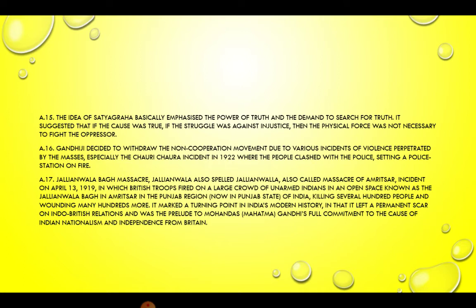Answer 17. Jallianwala Bagh Massacre. The Jallianwala Bagh massacre of Amritsar occurred on 13 April 1919, in which British troops fired on a large crowd of unarmed Indians in an open space known as the Jallianwala Bagh in Amritsar in the Punjab region, killing several hundred people and wounding many hundred more. It marked a turning point in India's modern history, leaving a permanent scar on Indo-British relations and was the catalyst to Mahatma Gandhi's full commitment to the cause of Indian nationalism and independence from Britain.